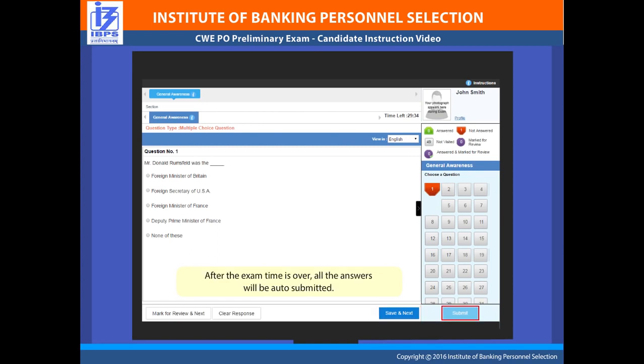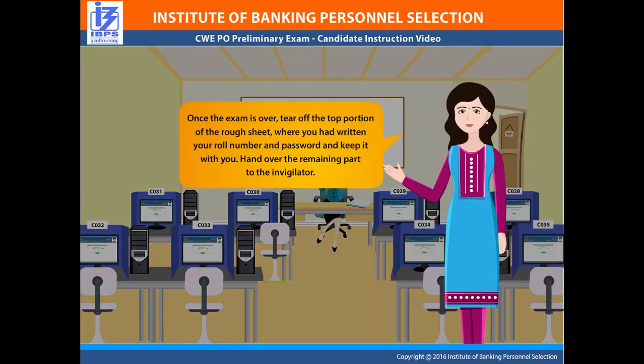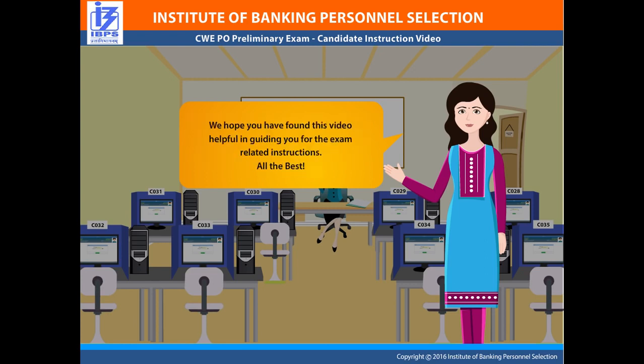After the exam time is over, all answers will be auto-submitted. Once the exam is over, tear off the top portion of the rough sheet where you had written your roll number and password, and keep it with you. Hand over the remaining part to the invigilator. We hope you have found this video helpful in guiding you for the exam-related instructions. All the best.